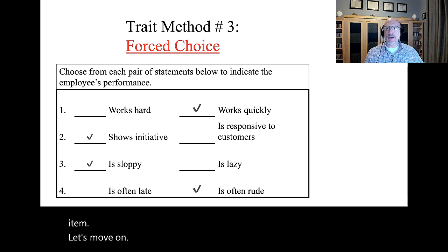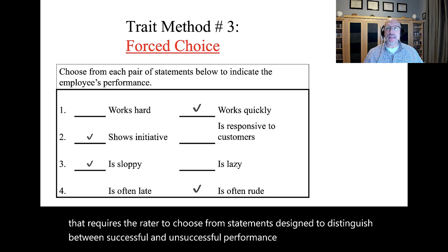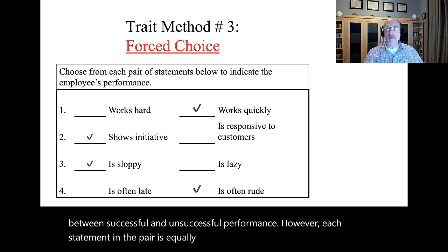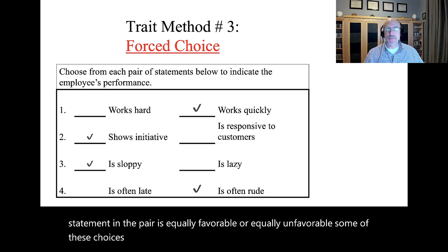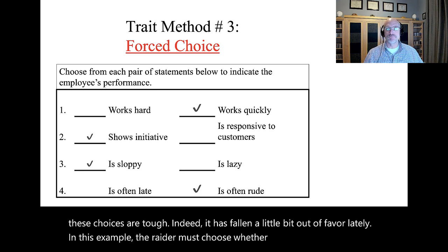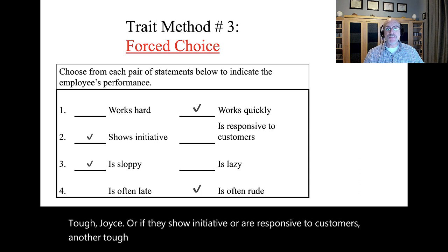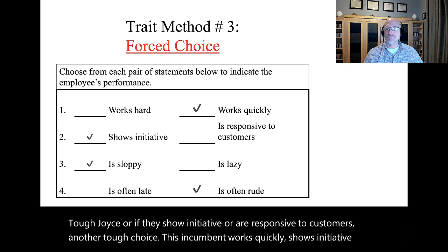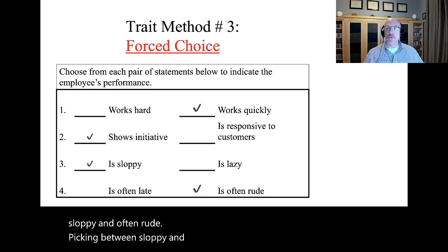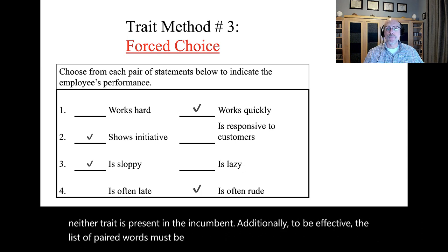The forced choice method is a trait approach to performance appraisal that requires the rater to choose from statements designed to distinguish between successful and unsuccessful performance. However, each statement in the pair is equally favorable or equally unfavorable. It has fallen a little bit out of favor lately. In this example, the rater must choose whether the incumbent is sloppy or lazy — a tough choice — or if they show initiative or are responsive to customers. Additionally, to be effective, the list of paired words must be very, very long.